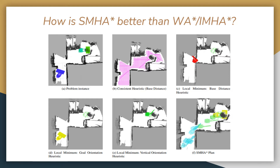To rectify this, two additional inadmissible heuristics are computed: one targeting the goal orientation and another targeting a vertical orientation for the end effector. Unfortunately, none of these heuristics alone are powerful enough to reach the goal as they both suffer from their own depression regions. Since all heuristics lead to separate depression regions, IMHA star cannot avoid any of them and performs as poorly as WA star. However, as shown in figure F, SMHA star can efficiently compute a plan by using partial paths from different heuristics, using the vertical orientation heuristic through the corridor and door, then switching to the goal orientation heuristic to align the end effector.